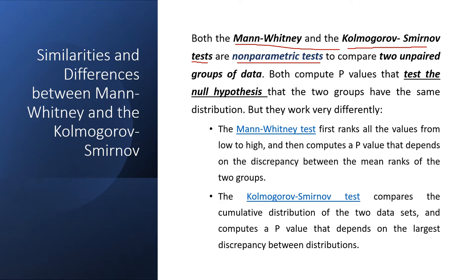Both are non-parametric — this is the common similarity between these two tests, and both can be used for two unpaired group data. Both compute the p-value and test the null hypothesis, making them 100% the non-parametric alternative to the independent t-test. They compare two groups with the same distribution framework but work differently — the calculation part of both tests is totally different.